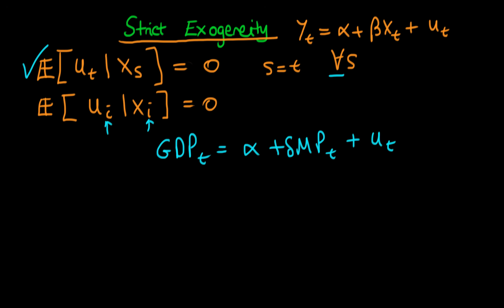It's frequently the case that independent variables can have a lagged effect on the dependent variables. So GDP at time t plus 2 might depend on monetary policy at time t, and that would be contained within this error term.